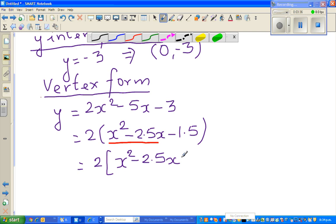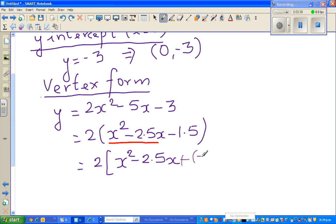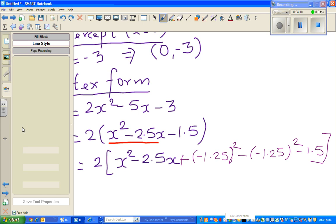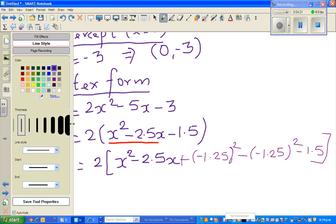Half of negative 2.5 is minus 1.25. So 1.25 squared, and then I've added negative 1.25, so I have to take away that much. This is negative 1.25 squared. I've added that, and I'll take away negative 1.25 squared, and then I've got a negative 1.5 sitting here.